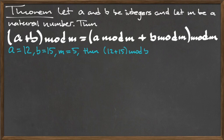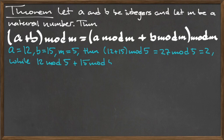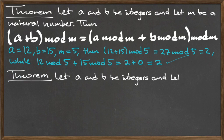To illustrate this, let a equal 12, b equal 15, and m equal 5. Then the left-hand side of the equation is the quantity (12 plus 15) mod 5, which equals 27 mod 5, which equals 2, using any of the three methods described previously. To evaluate the right-hand side, we work from the innermost parentheses outward. 12 mod 5 is equal to 2, and 15 mod 5 is equal to 0. 2 plus 0 is equal to 2, and 2 mod 5 is equal to 2. The left and right-hand sides agree, which shows that the theorem holds.